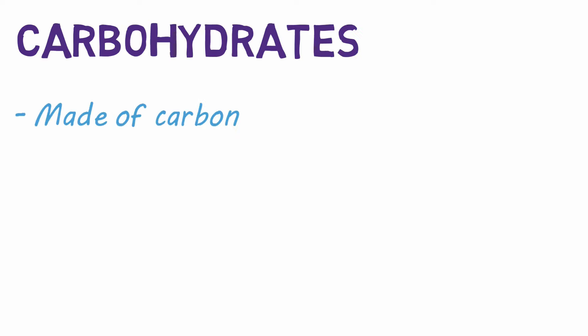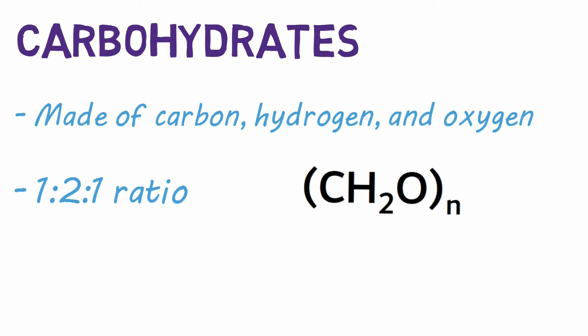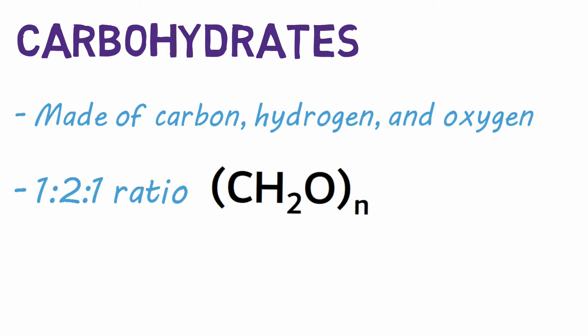Let's start with carbohydrates. Carbohydrates are a macromolecule made up of carbon, hydrogen, and oxygen in a 1 to 2 to 1 ratio. So there is one carbon for every two hydrogens and one oxygen in all carbohydrates. They are also known as sugars and have several key functions in living organisms.